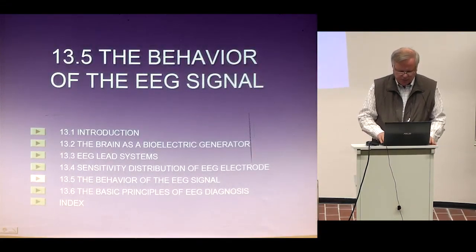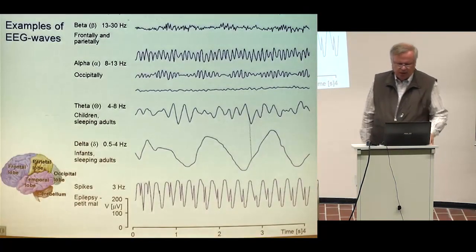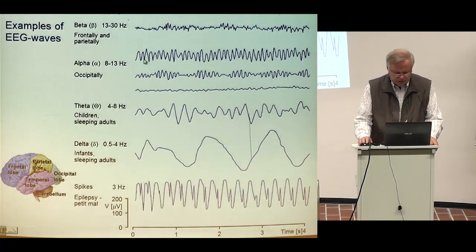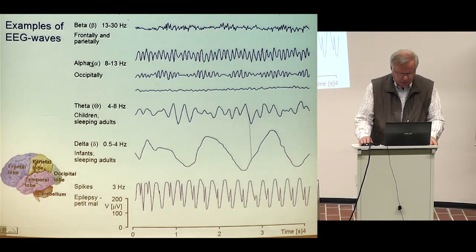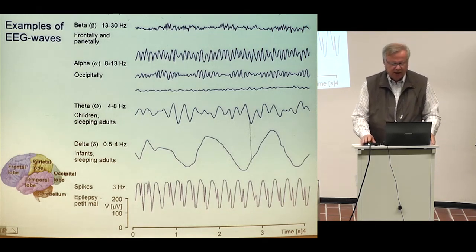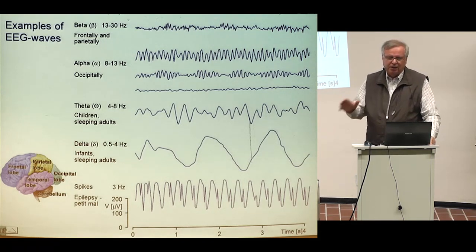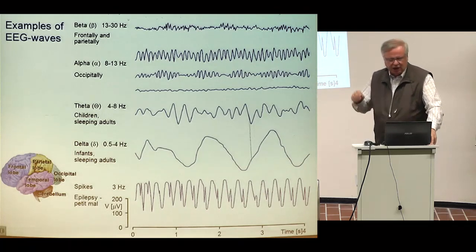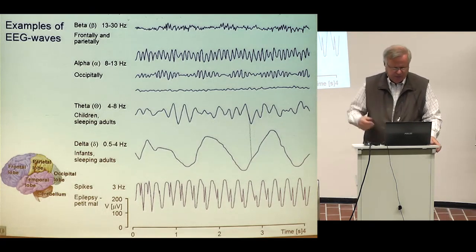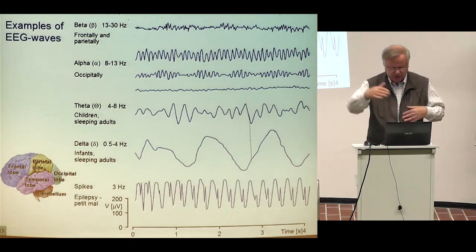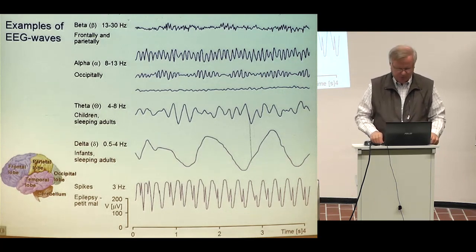Now I speak about the EEG signal — how it looks. Here are some examples of EEG signals. They are named with alphabetical symbols: alpha, beta, delta, theta. But this alphabetical order is not the same as the order of the frequency bands — it is a historical order. It was the alpha wave which was first found and named alpha, then beta waves were found, and so on. They are not in a beautiful frequency order which we engineers would like to see.